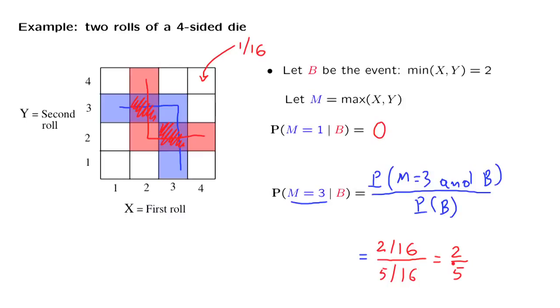We could have gotten that same answer in a simple and perhaps more intuitive way. In the original model, all outcomes were equally likely. Therefore, in the conditional model, the five outcomes that belong to B should also be equally likely. Out of those five, there's two of them that make the event of interest occur. So given that we live in B, there's two ways out of five that the event of interest will materialize. So the event of interest has conditional probability equal to 2 fifths.